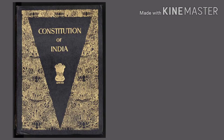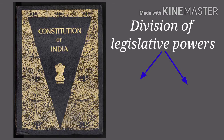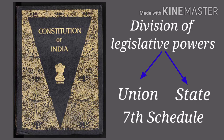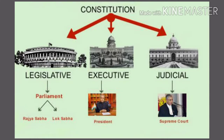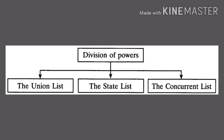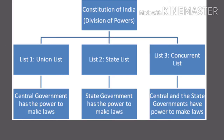The Indian Constitution lays down the division of legislative powers between the Union and the State Government in the 7th Schedule of the Constitution. The executive powers of the Union and the State Governments co-exist with their legislative powers. The powers are enlisted under three lists: the Union List, the State List, and the Concurrent List.